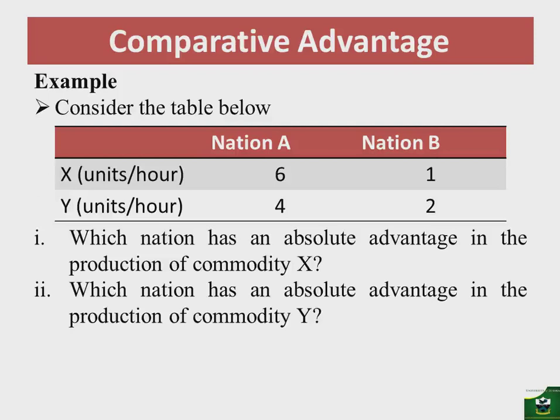Nation A is more efficient in the production of commodity Y, and therefore nation A has an absolute advantage in the production of both commodity X and commodity Y. This means nation A is more efficient in the production of both commodities than nation B. Nation B is less efficient in the production of both commodities compared to nation A, meaning nation B has an absolute disadvantage in the production of both commodities.